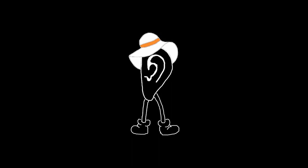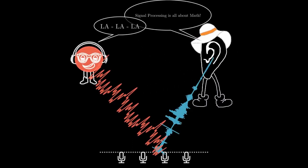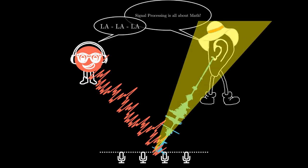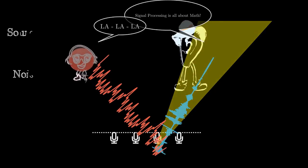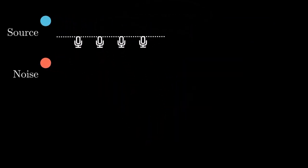The fundamental idea behind beamforming is to maintain the source from a specified direction and suppress unwanted interference. How can we do this? We start with the desired source and a noise source, captured by a linear microphone array.